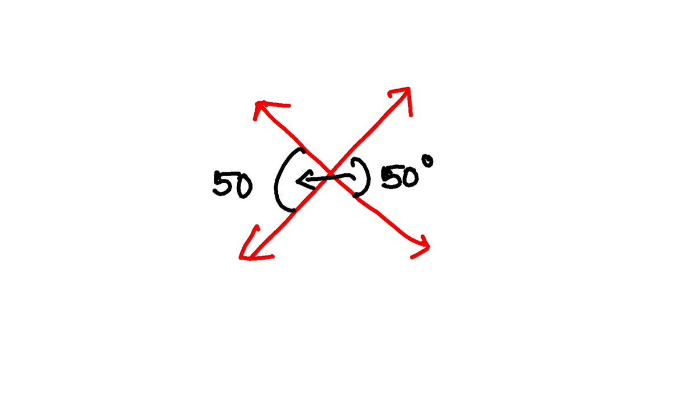So if I have two straight lines intersecting each other at one point, and if it is given that this angle is, suppose, 50, its vertically opposite is this one. So this angle is also 50 degrees.